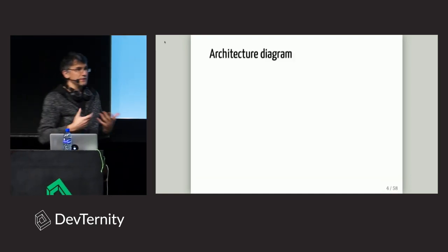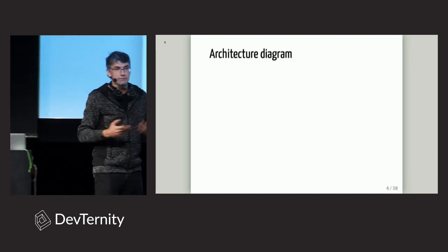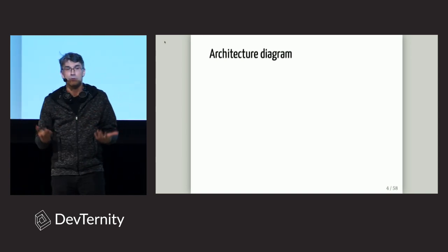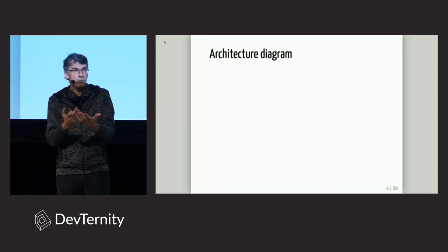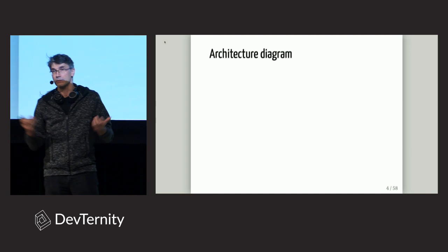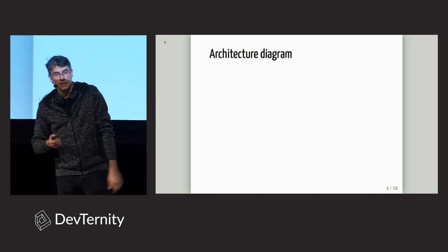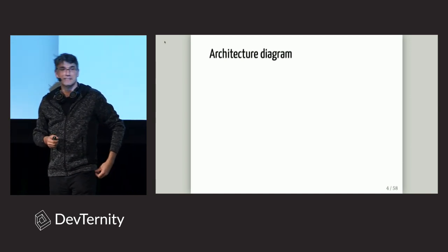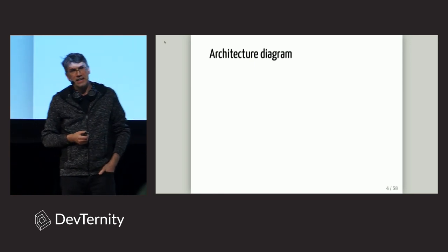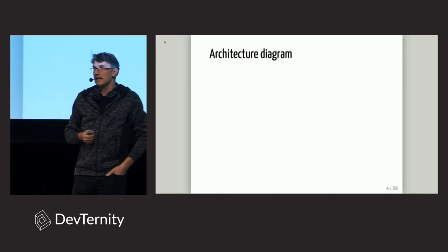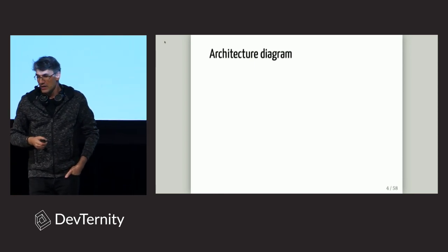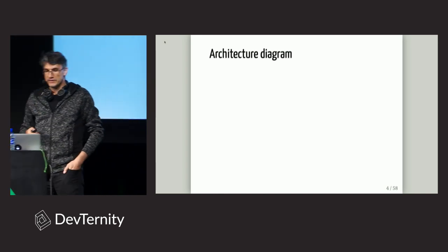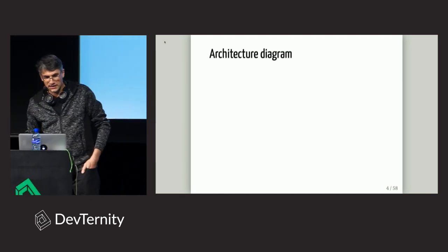Whenever I join a company to help them out, the first thing I ask for is: what's your architecture? Can you give me diagrams? And the interesting thing is that most companies can't give me anything. People say, well, I don't have a diagram, but I can draw something for you. If I'm lucky and they have something, they show me something which looks like this.